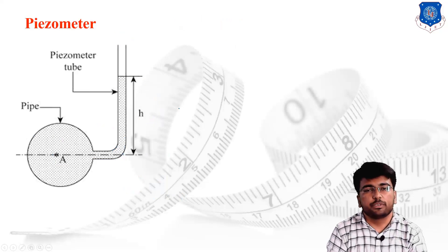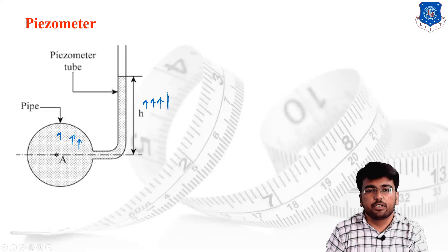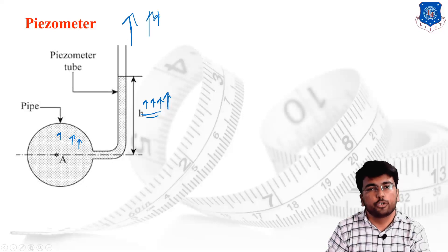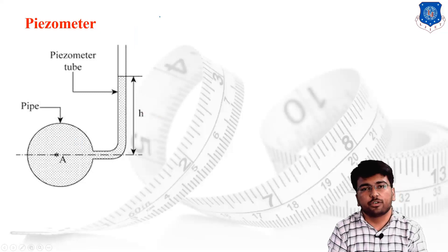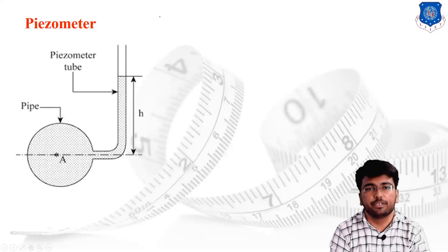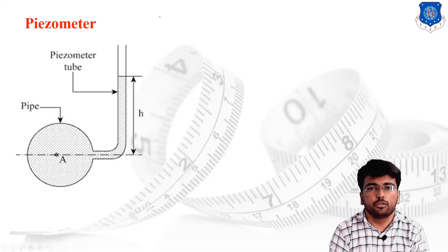The piezometer has limitations. Since it is open to atmosphere, as pressure increases, the height of the fluid column increases drastically, requiring a taller and taller tube, which is not feasible in mechanical industries. Therefore, the piezometer is useful only for low to medium pressure ranges and is not suitable for measuring high pressures.